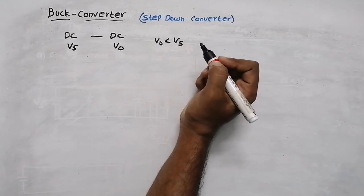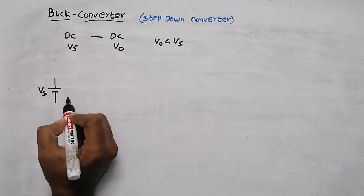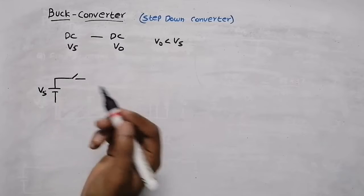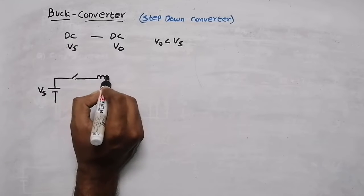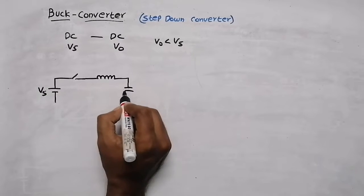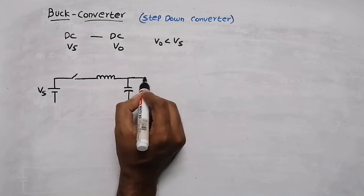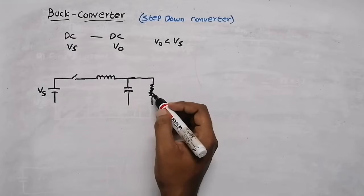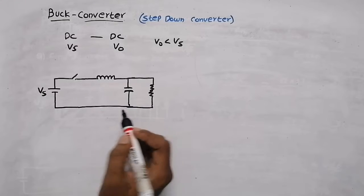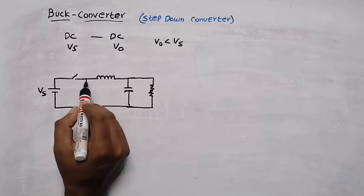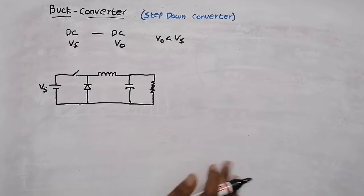Coming to the circuit diagram, we have a source DC voltage connected to a switch — the switch can be a transistor, BJT, IGBT, or MOSFET. That switch is connected to an inductor, then to a capacitor. The inductor and capacitor act as a filter circuit. Then a resistor is connected as the load — the load can be inductive, but currently we're drawing it as a resistor. When the switch is off, we need a diode to circulate the inductor current.